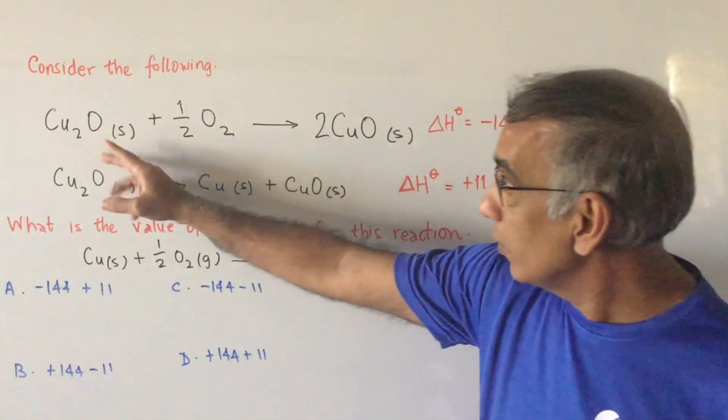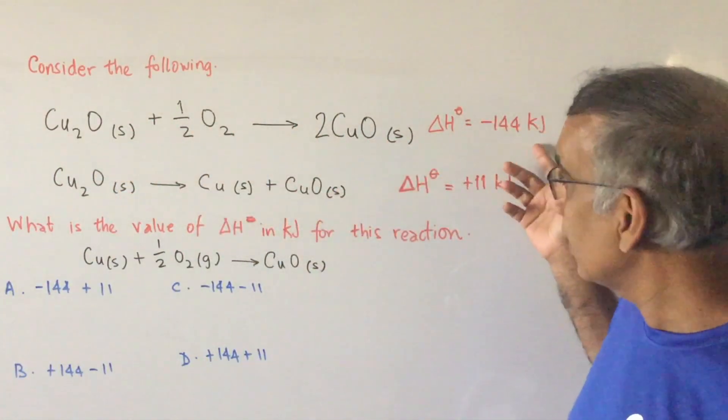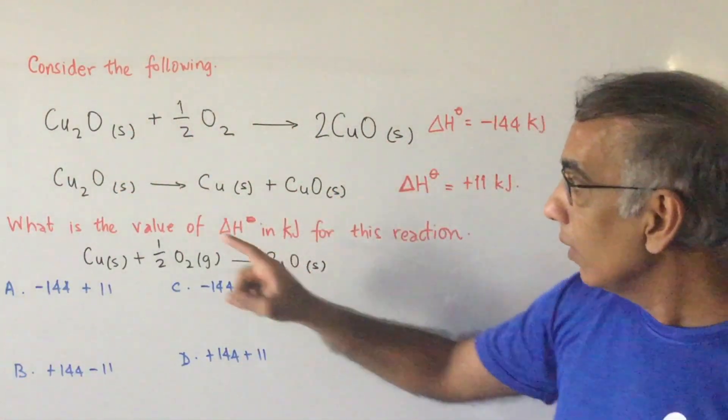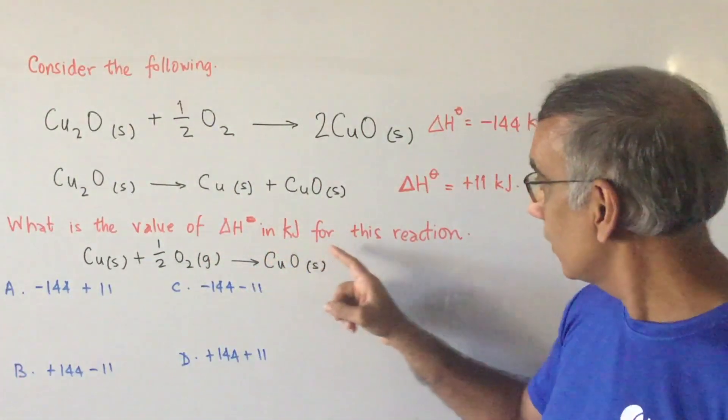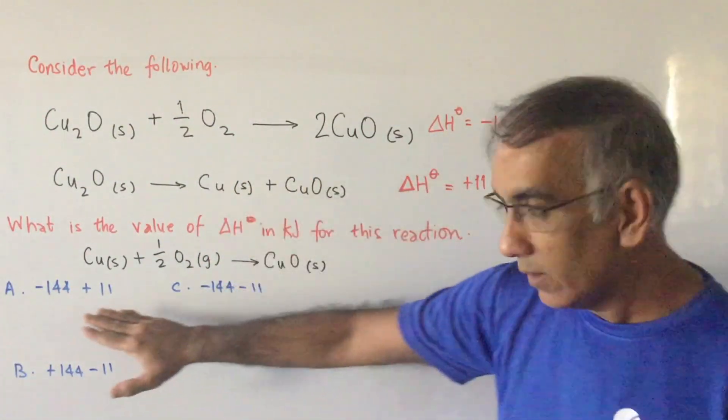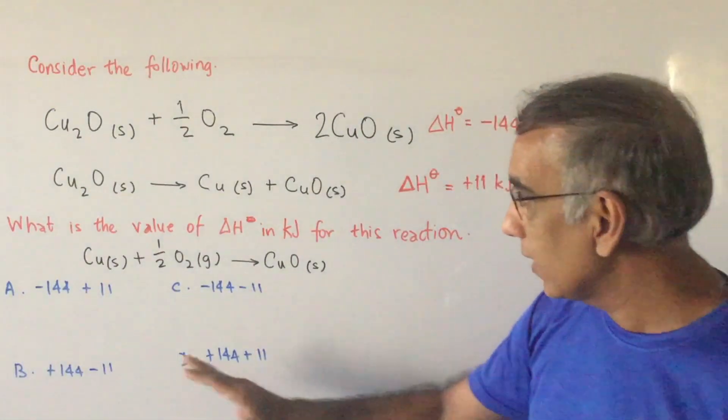And it says that you've got this equation and you've got this equation. What's the value of delta H in kilojoules for this reaction? Got your four choices down here.